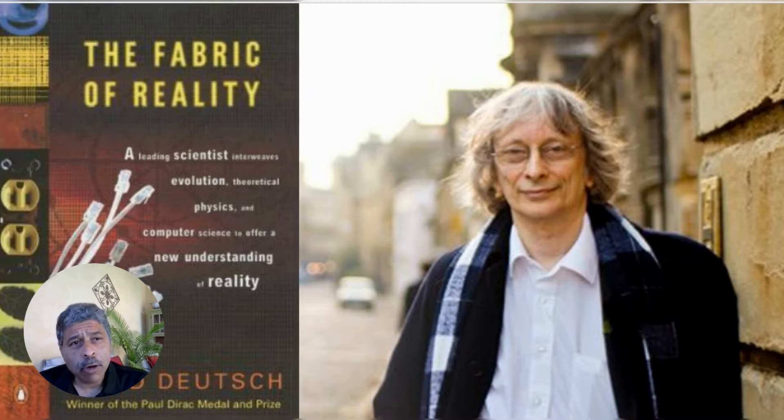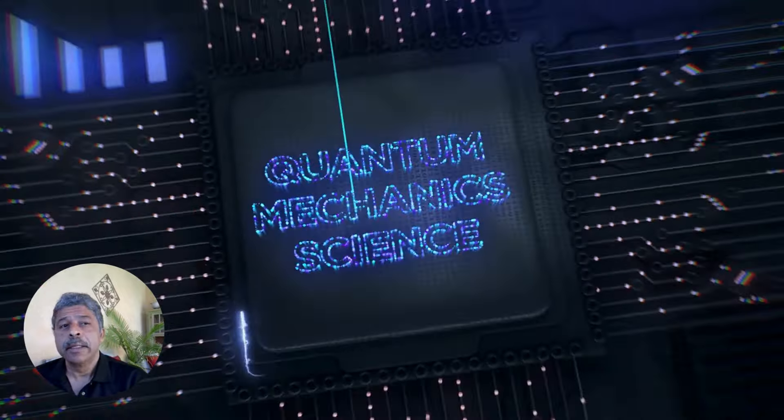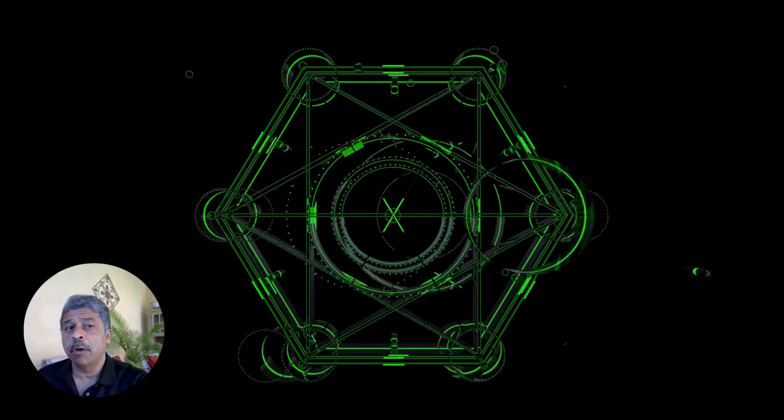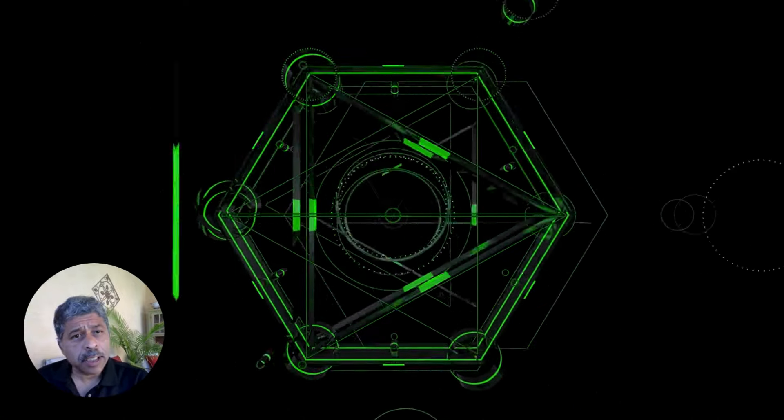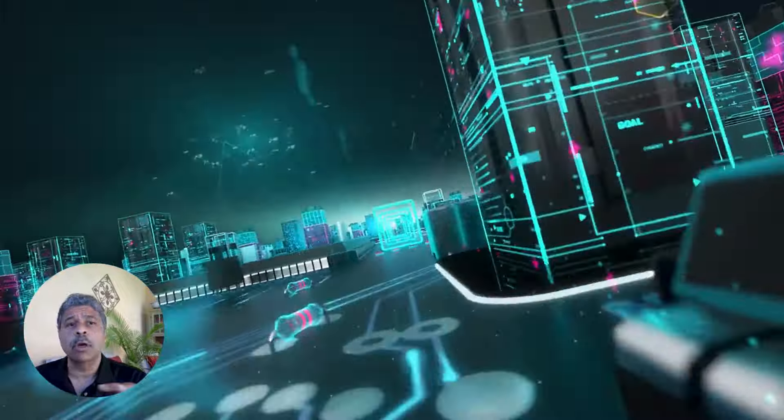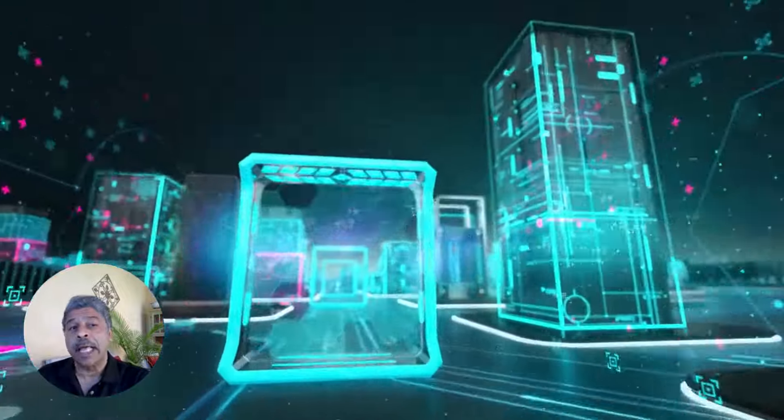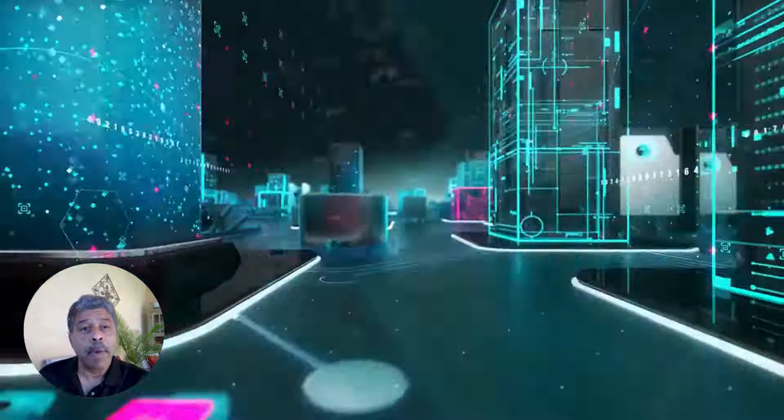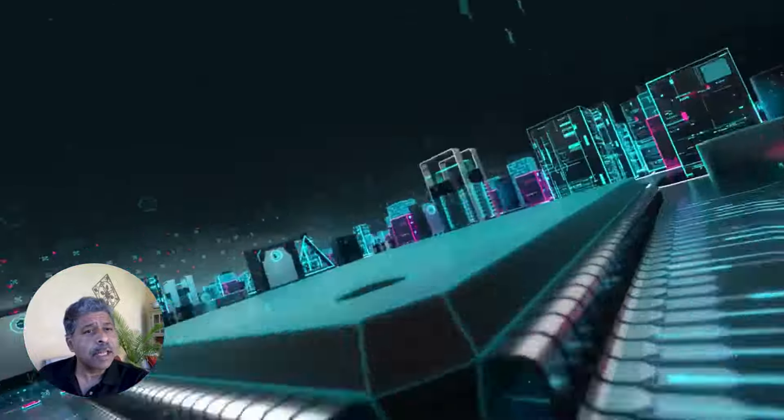Now going on to the second book by David Deutsch, The Fabric of Reality. This is a masterful interweaving of threads from diverse disciplines. Deutsch guides us seamlessly through the complex interplay of science, philosophy, and mathematics, crafting a narrative that is as intellectually rigorous as it is captivating. The Fabric of Reality is constructed upon four foundational strands.